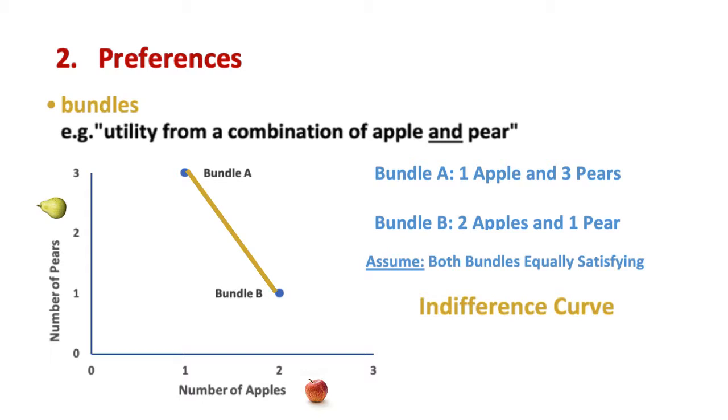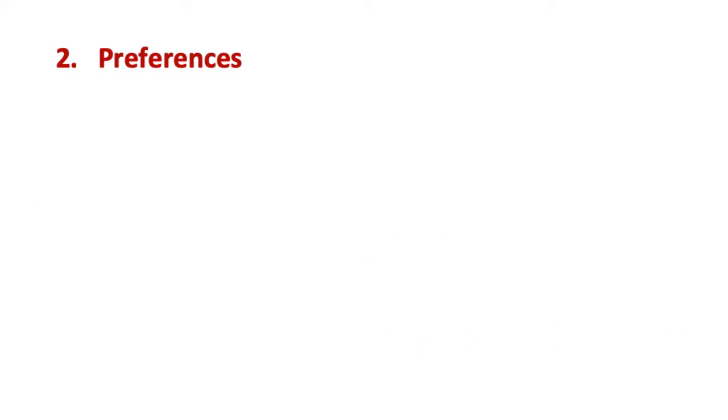Although only two bundles are shown on the indifference curve in this diagram, note that any combinations of apples and pears on the indifference curve would have the same utility as bundles A and B. We have discussed how indifference curves represent a set of preferences of the same level of utility when choosing between a combination of two goods.